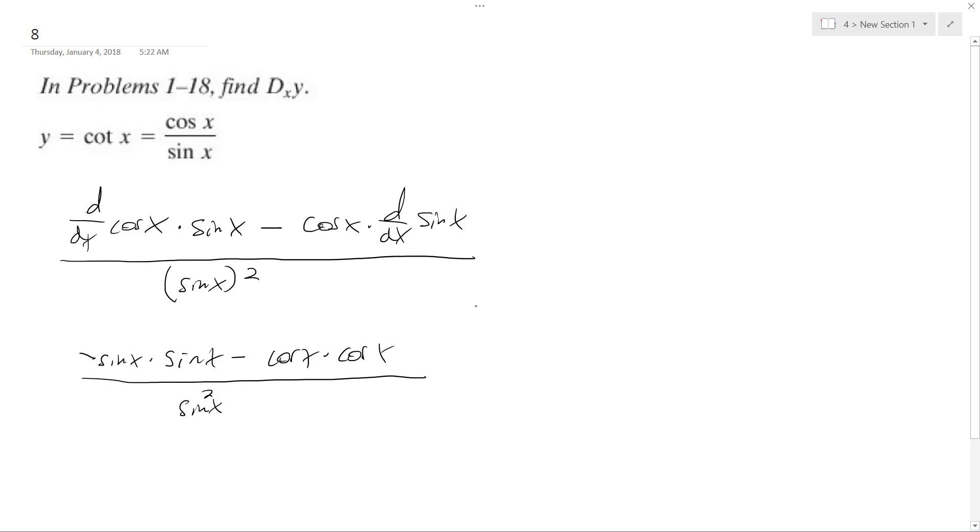So what happens here is in the numerator I get negative sine squared x minus cosine squared x, all over sine squared x.